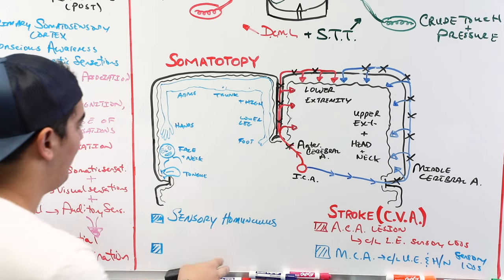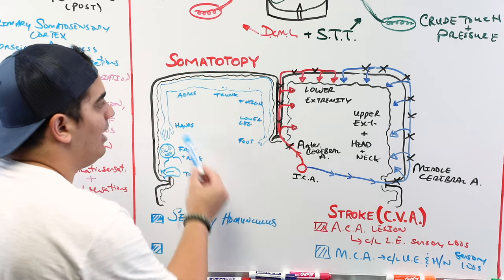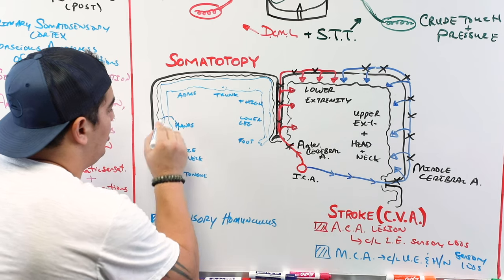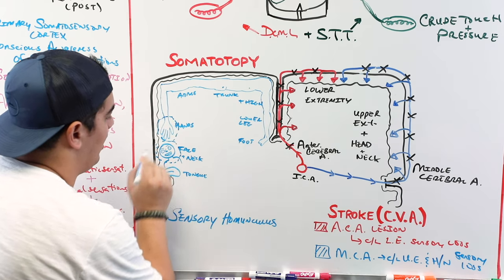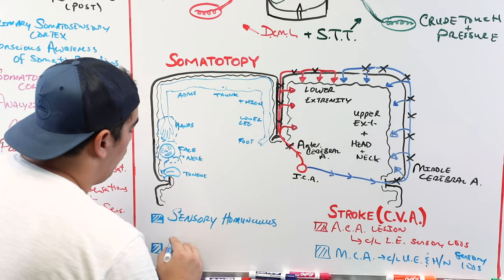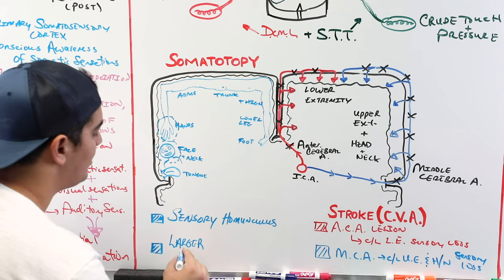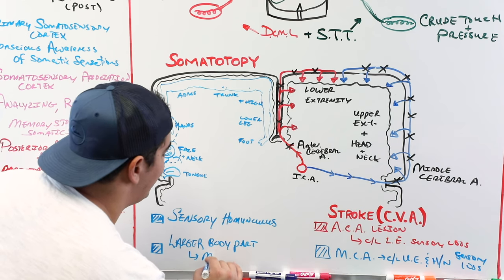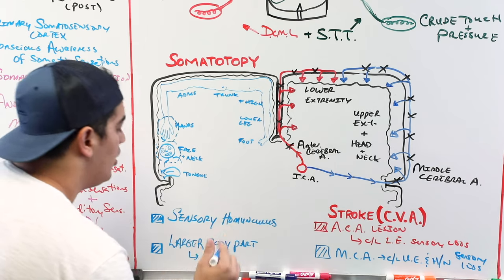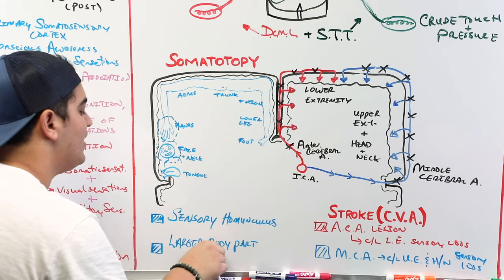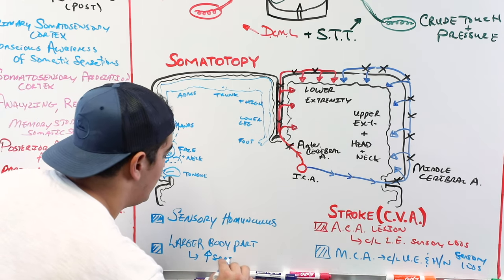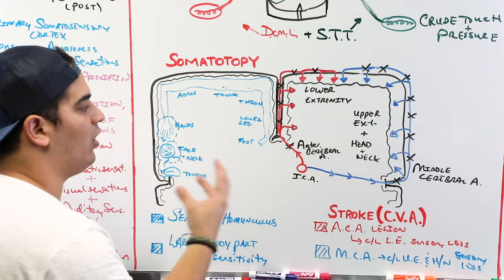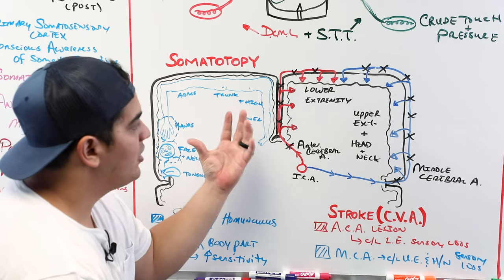One more point about the homunculus: the size of a body part in the homunculus reflects the density of sensory nerves from that area. Larger or more distorted areas — like the hands and face — indicate increased sensitivity, because more sensory nerves are coming from those regions. That covers the primary somatosensory cortex.